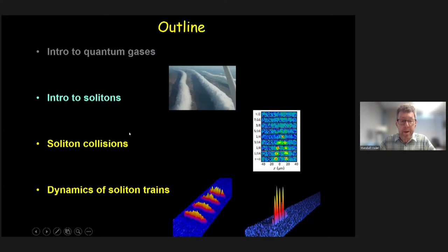So that's my introduction to quantum gases. Let me talk now about solitons. Solitons are ubiquitous any time you have nonlinear wave physics. They show up in a multitude of settings, including this picture in Australia of a cloud formation in which these cloud formations are effectively solitons — not quantum solitons, but classical solitons.